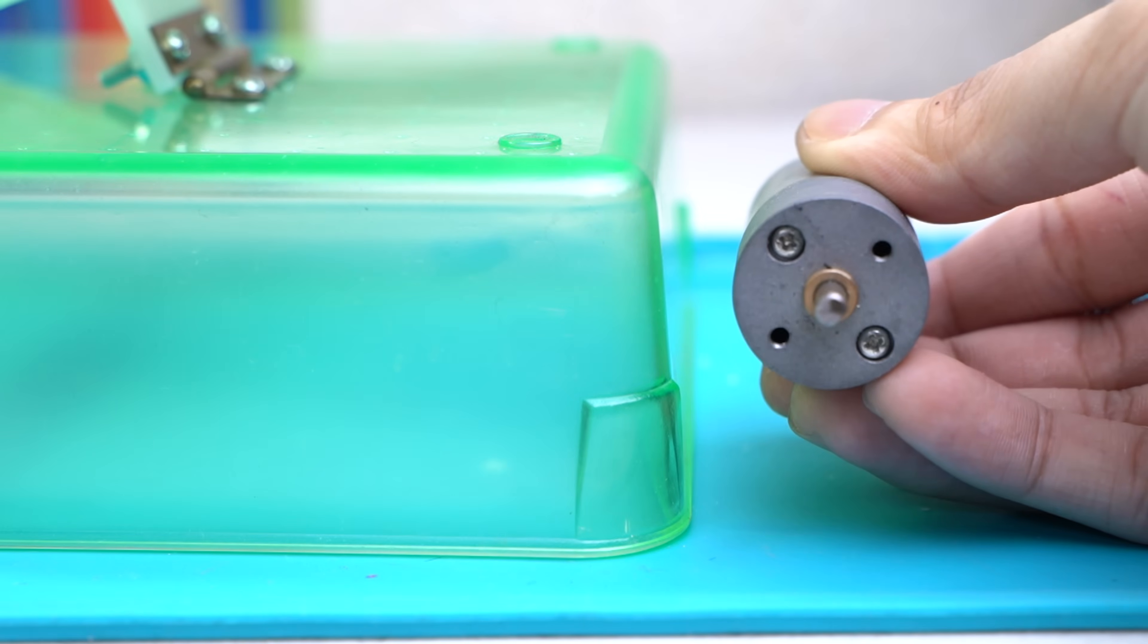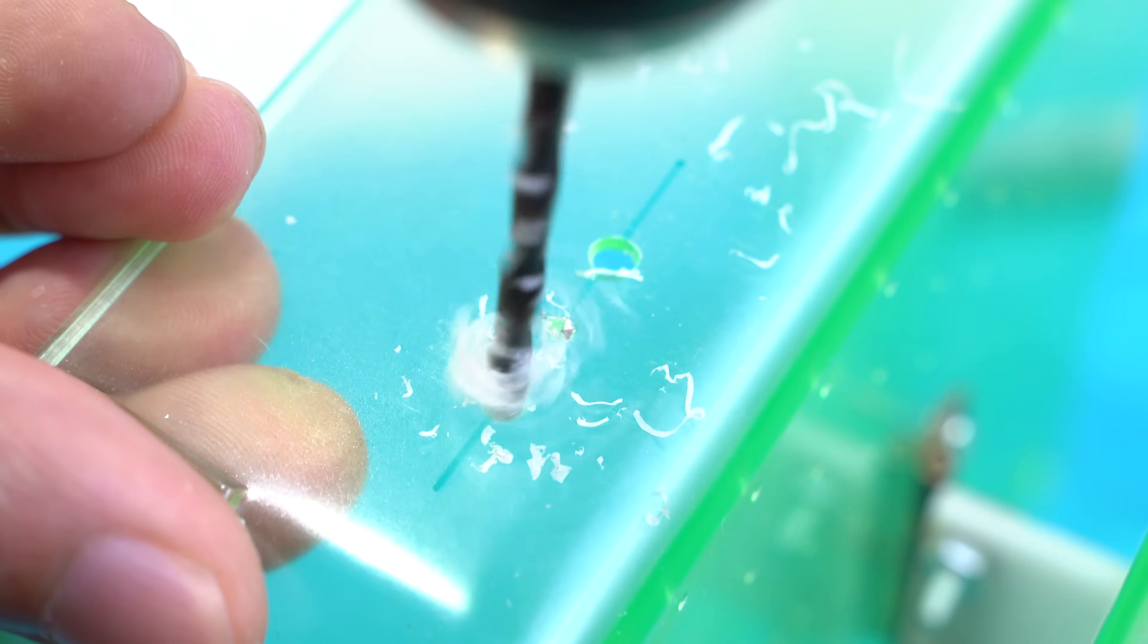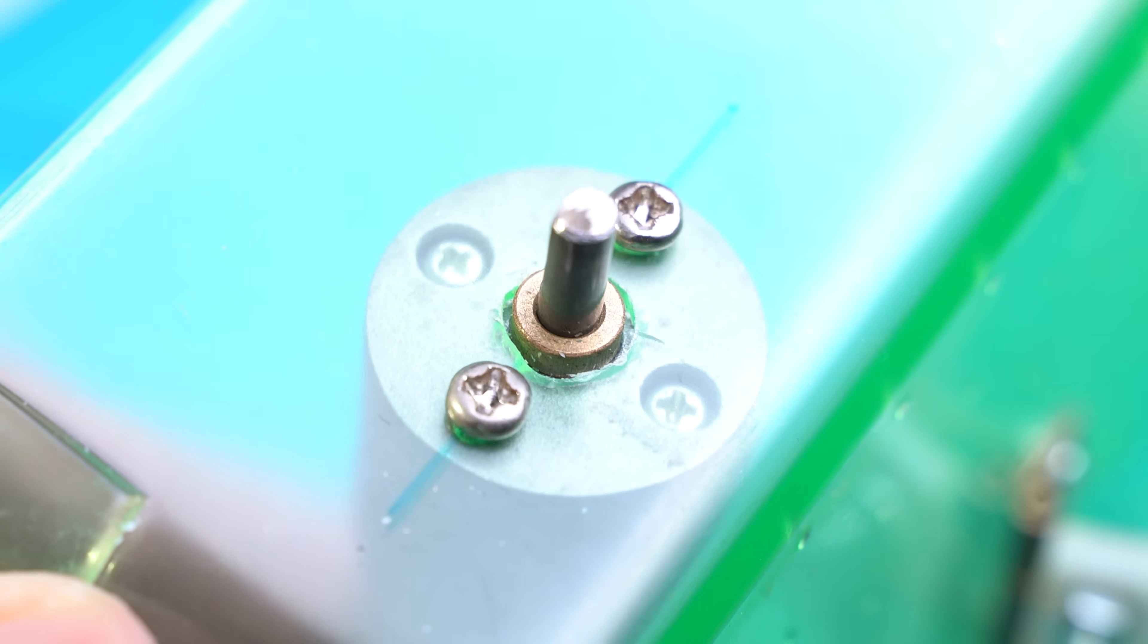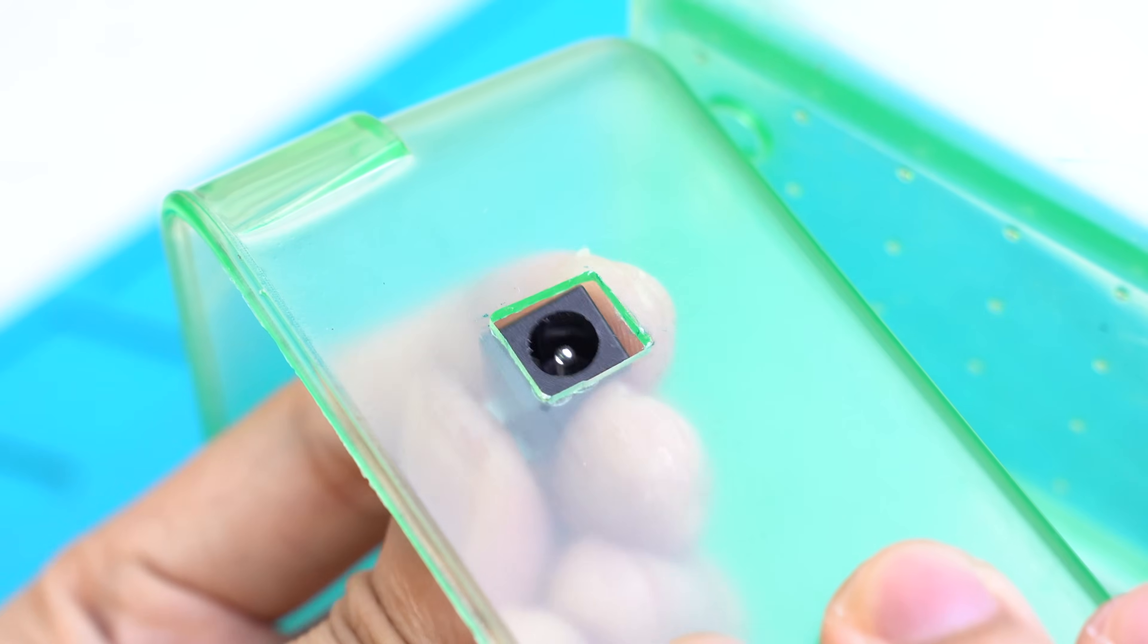Now we have to mount the gear motor to the side of the lower tray. I drilled two holes for the motor's M3 screw mounts and a larger hole at the center for the motor's shaft. Now we can screw the gear motor in place. Take note you'll need two M3 screws for this.